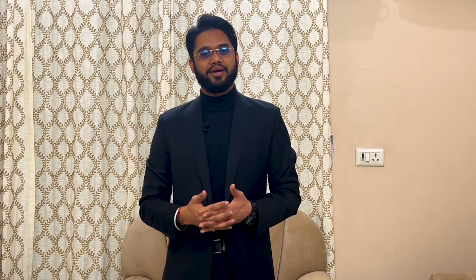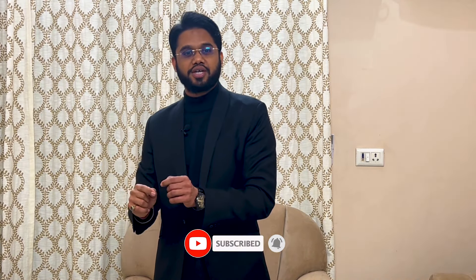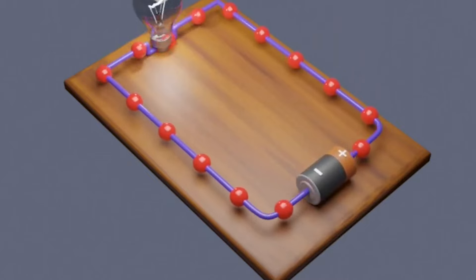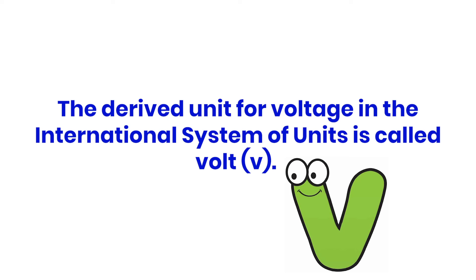Voltage can be understood very easily. When you have a wire, electrons flow — the force that drives them is called Electromotive Force. That Electromotive Force pushes ions and moves current from one place to another. That force is called voltage. Electric voltage is measured in volts and is represented by the symbol V.